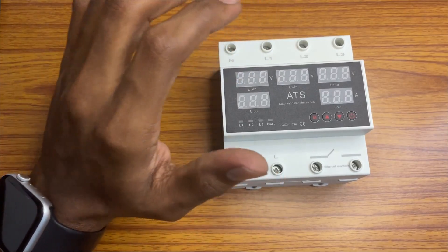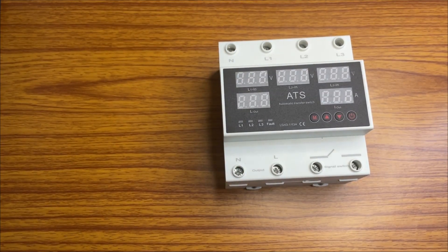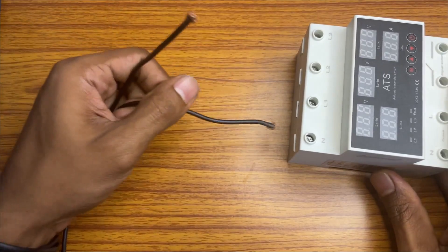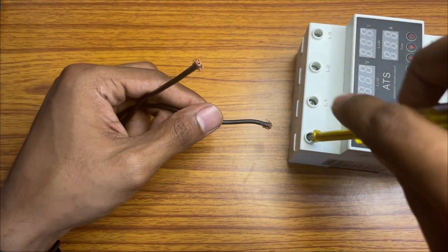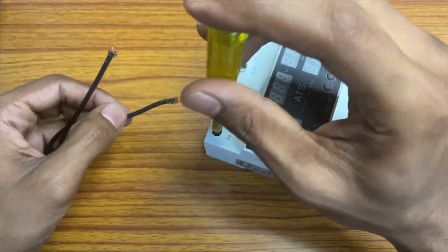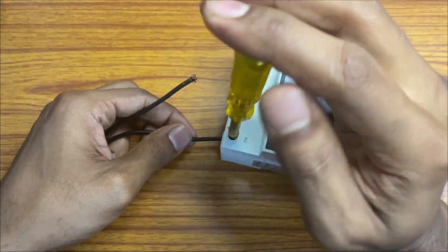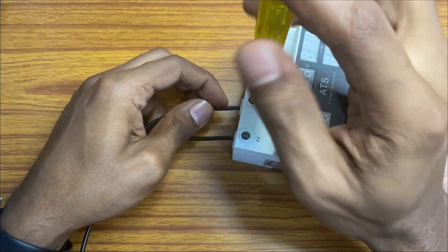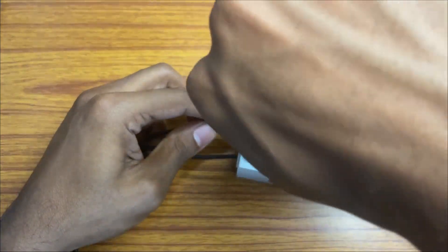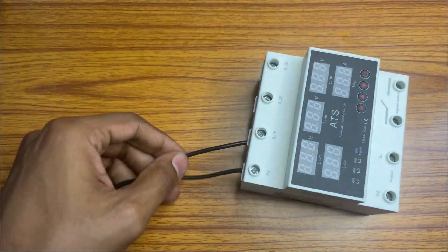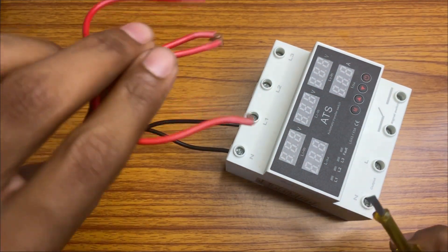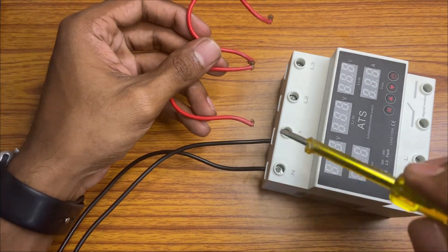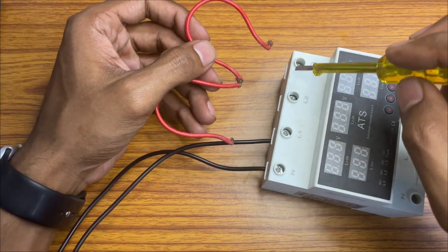Let me show you how to do the connection. This is neutral and line. I don't have a three-phase connection, so for example I am looping from L1 to L2, L2 to L3 as a three-phase.